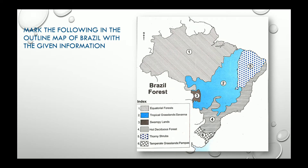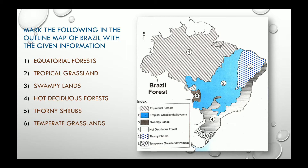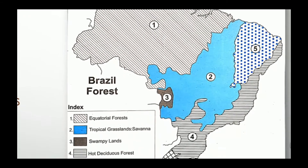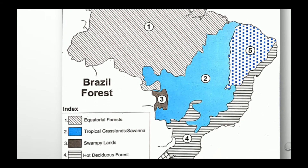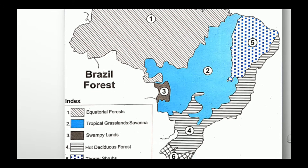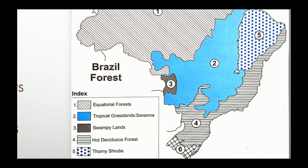Now, mark the following in the outline map of Brazil. It is already marked — let us have a look. The forests in Brazil are: equatorial forests, tropical grassland, swampy land, deciduous forests, thorny shrubs, and temperate grassland. Number one — equatorial forests — is occupying the maximum area of Brazil and it corresponds to the Amazon rainforest or the Amazon River basin. Number two in blue color is the tropical grassland, also called savannah, occupying the Brazilian highland.